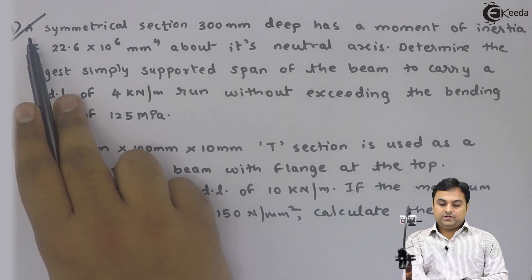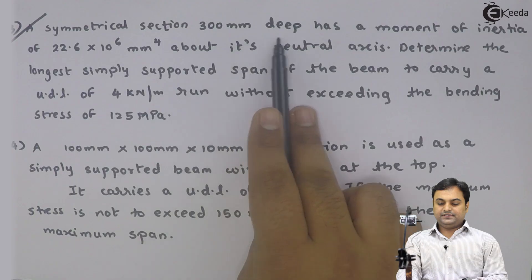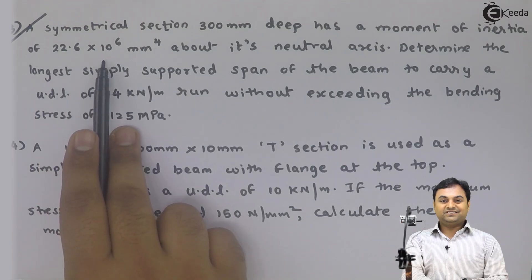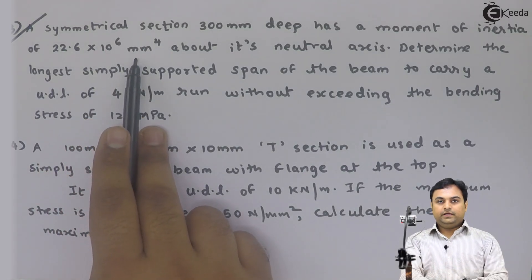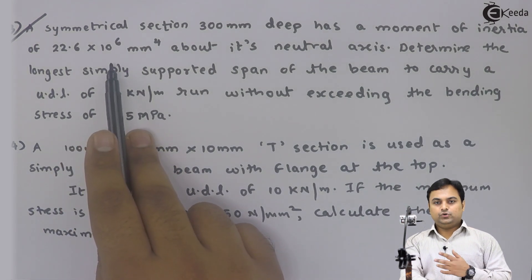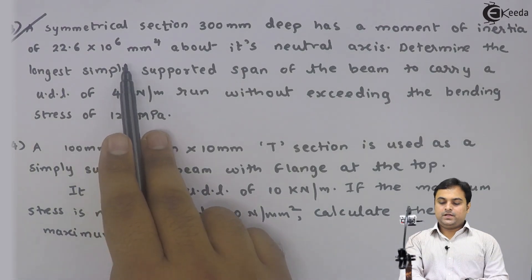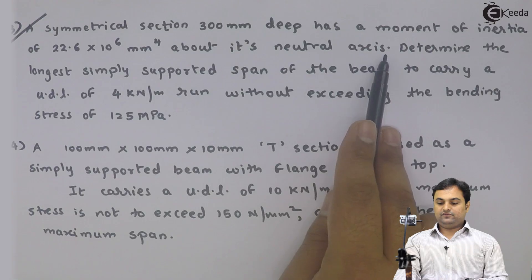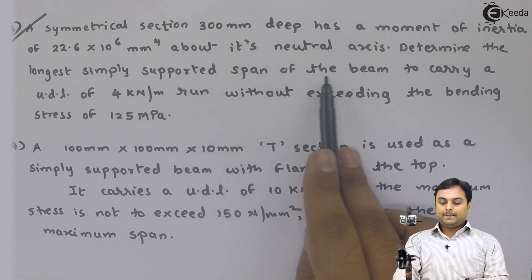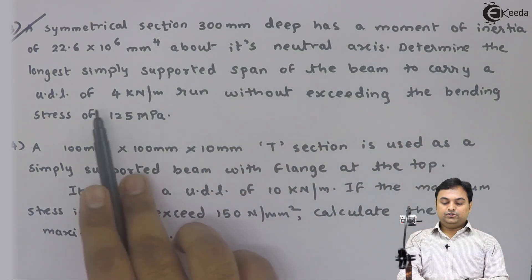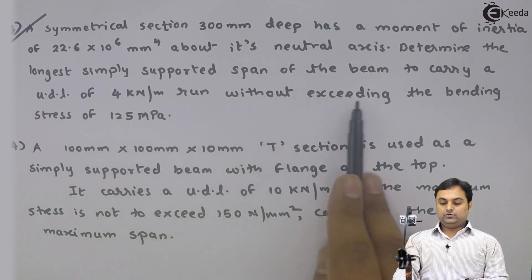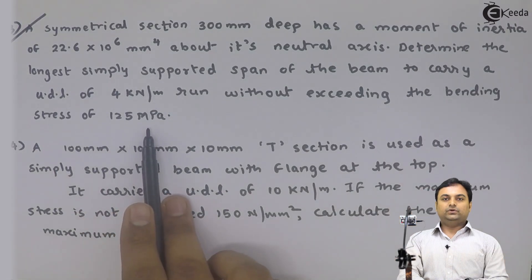What is given? A symmetrical section 300 mm deep has a moment of inertia of 22.6 × 10⁶ mm⁴. There is no need to calculate the moment of inertia I value. Determine the longest simply supported span of the beam to carry a UDL of 4 kN per meter run without exceeding the bending stress of 125 MPa.